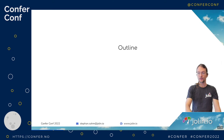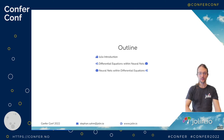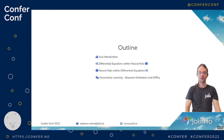The outline for my talk today: we are going to start with the Julia introduction, then I'm showing you how you can use differential equations within a neural network in Julia. Second, we do the reverse — a neural net within a differential equation, which I think is where you could say this is a neural differential equation. We are also going to look into uncertainty learning, Bayesian estimation of such neural differential equations, a short remark on symbolic regression, and finally some benchmarks.